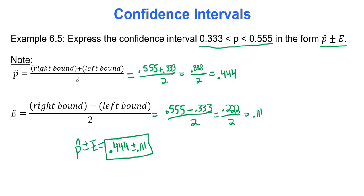So far, you've been exposed to many components of confidence intervals, including the sample proportion as a point estimate, critical values as part of the error bound, and various ways to express confidence intervals along with different confidence levels. In our next video, we'll put all this together and create solid confidence intervals. That's all for now — thanks for watching.